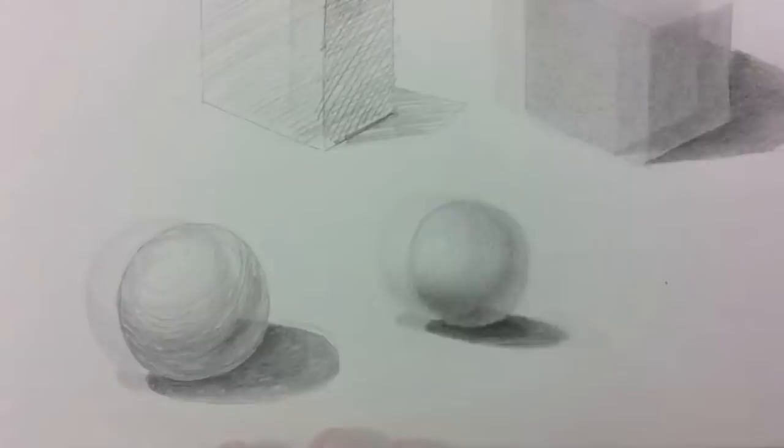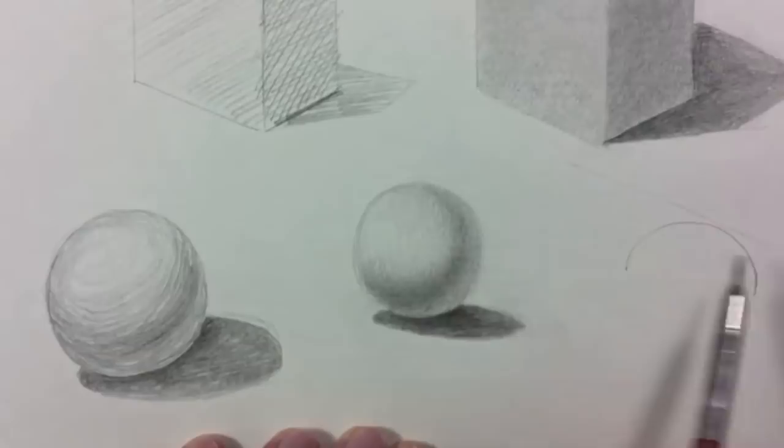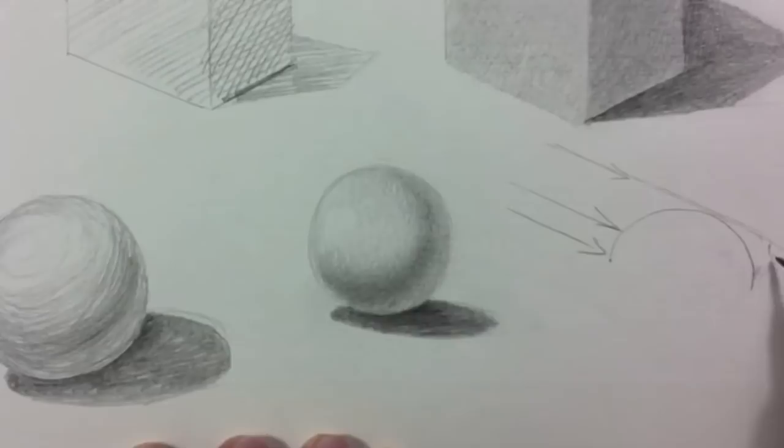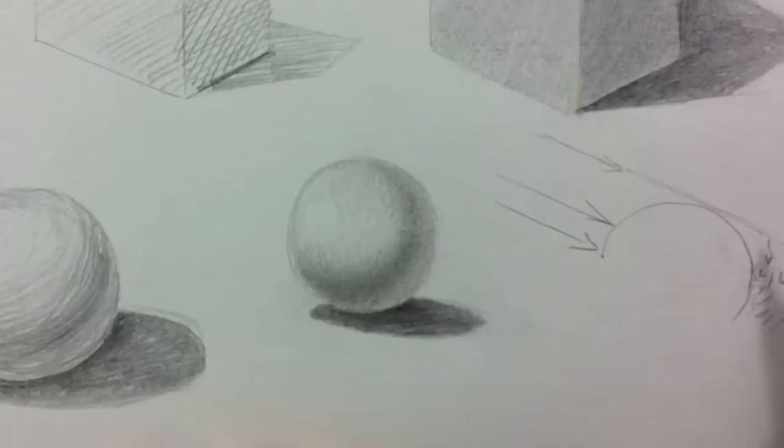The reason the core shadow happens is this. The beams of light come straight and let's say they come from this side. All this area will be in the light. Here is a curve. And the beams of light don't curve as fast. Actually, they don't curve at all.